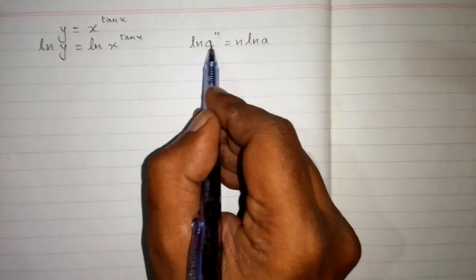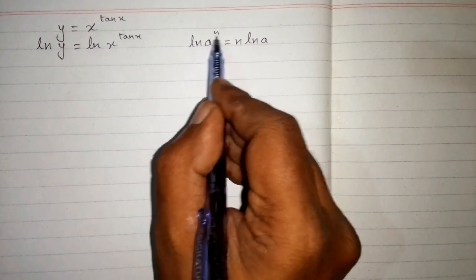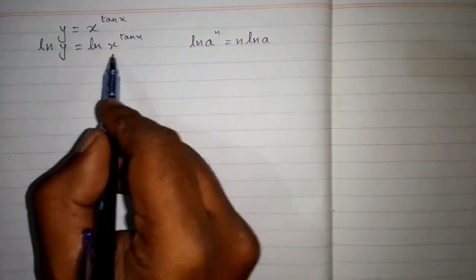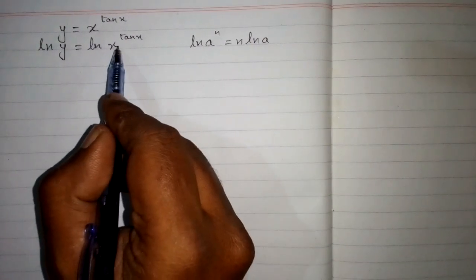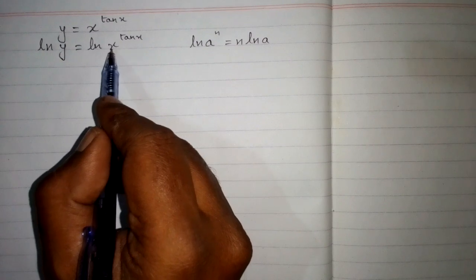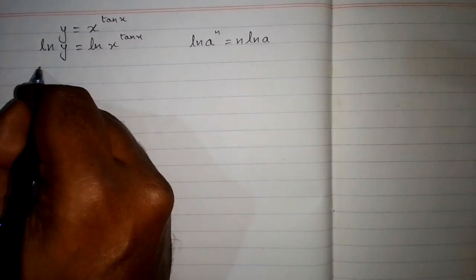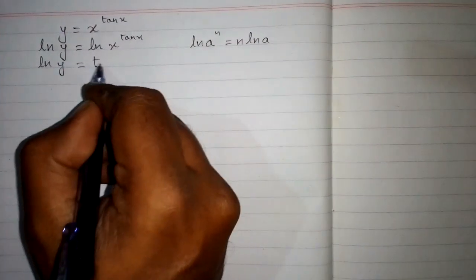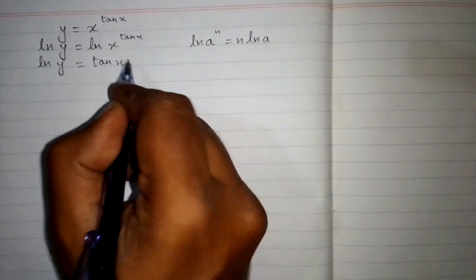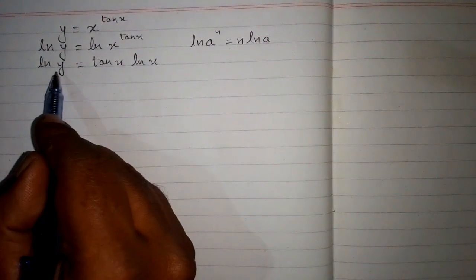If we have some power on this variable, then this power will become the coefficient constant. Here we will apply this rule. We have 10x as a power of x, so we will multiply this 10x by ln, or we can say that this 10x will become the coefficient of ln. Now we have ln of y is equal to 10x multiplied by ln of x.